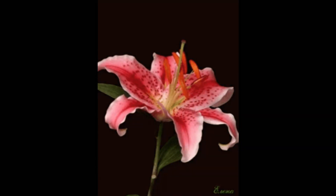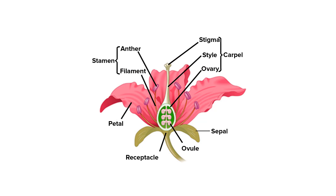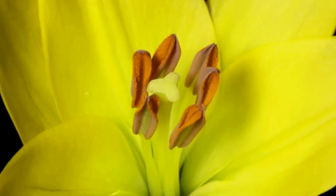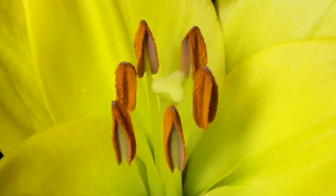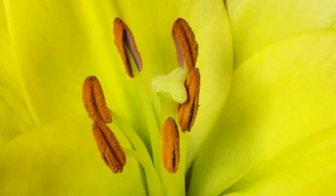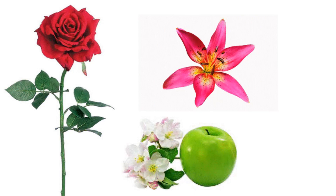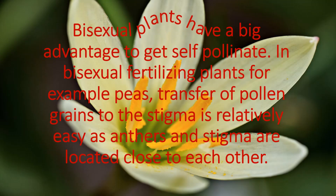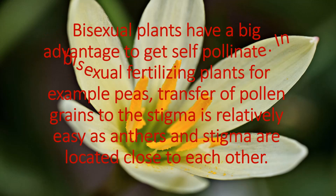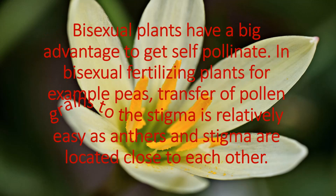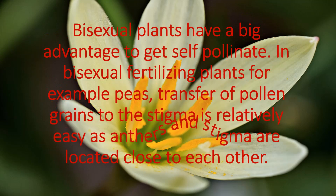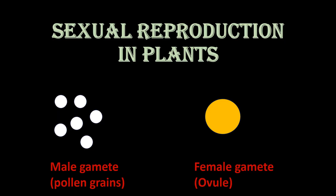In a bisexual flower, both the androecium and gynoecium are present within the same flower, allowing for self-pollination or cross-pollination. This structure enables the flower to produce both male gametes (pollen grains) and female gametes (eggs) necessary for sexual reproduction. Examples of plants with bisexual flowers include roses, lilies, and apples. Having both male and female reproductive organs in the same flower increases the efficiency of pollination and ensures reproductive success.